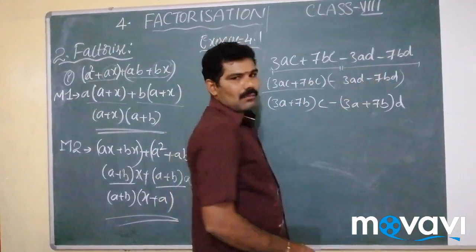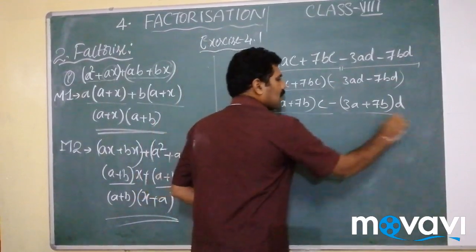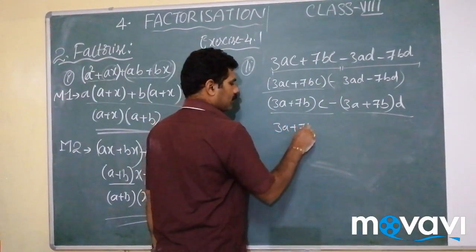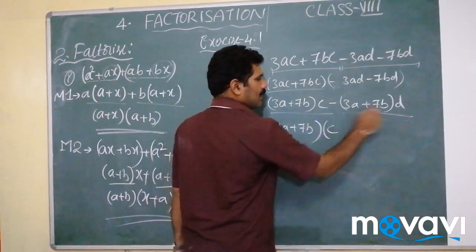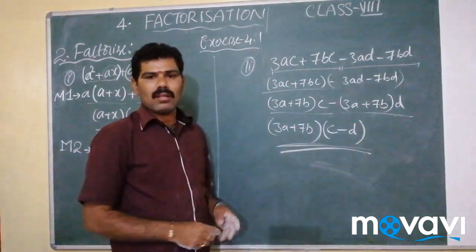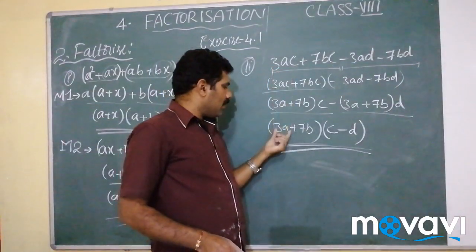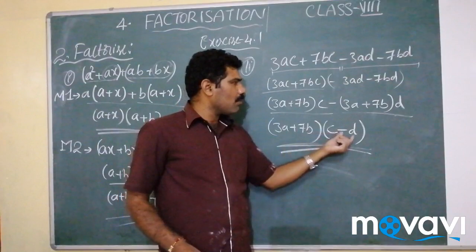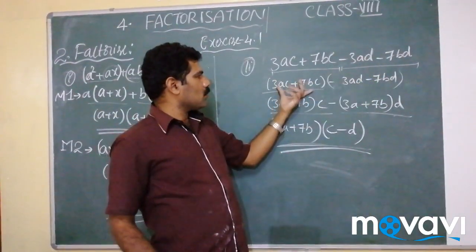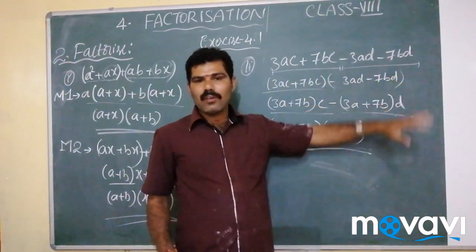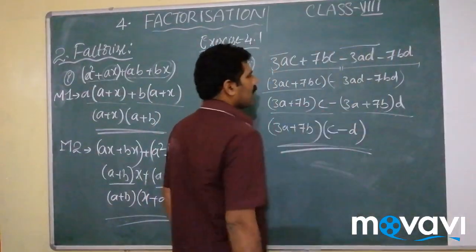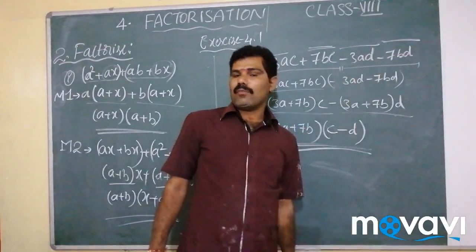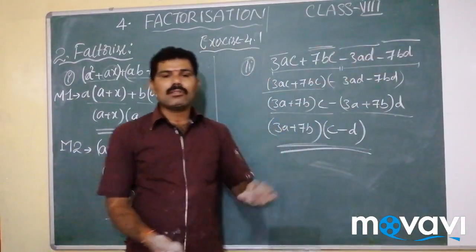These four terms are reduced to two terms. Now 3A plus 7B is the common factor in both terms. Taking 3A plus 7B outside, the remaining is C from the first term and minus D from the second term. So the factors are 3A plus 7B and C minus D. You can also do this by taking 3AC minus 3AD as one group and 7BC minus 7BD as another group, taking 3A and 7B as common factors respectively.